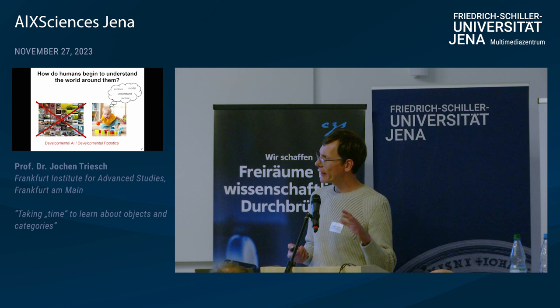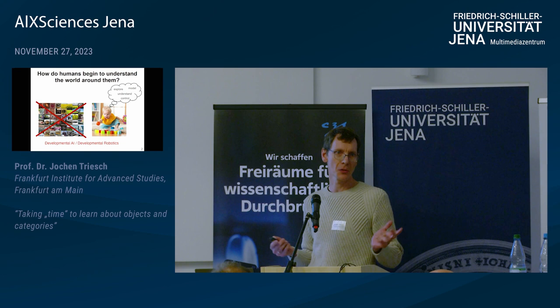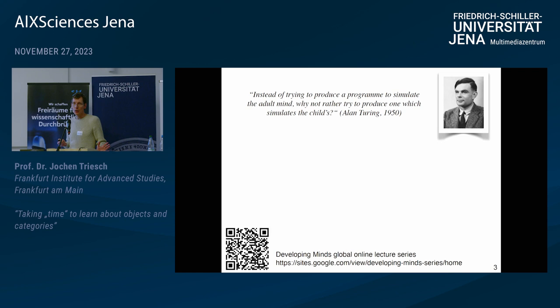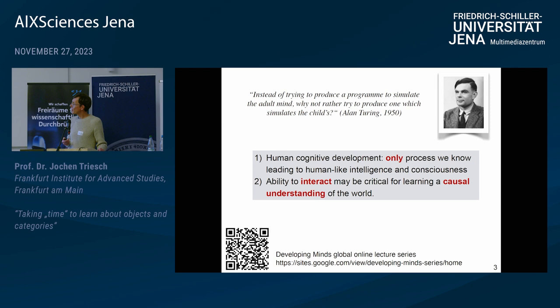Robotics more when this is also realized in physical robots. And developmental AI is the more recent term where we try to do all of this exclusively in simulation. This has a long history, even in Turing's writings, you find this quote: instead of trying to produce a program to simulate the adult mind, why not rather try to produce one which simulates the child and have machines learn like children? I think there are two really important reasons why this is very interesting and promising. The first is that human cognitive development is really the only process we know that leads to human-like intelligence and consciousness.